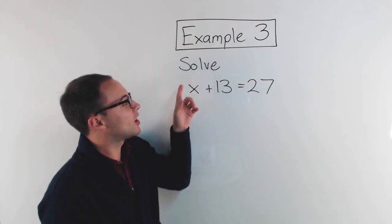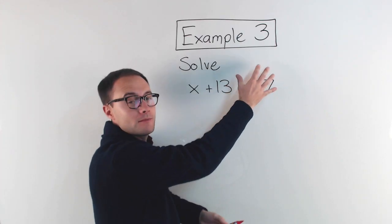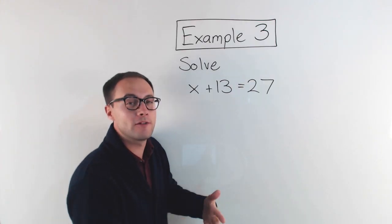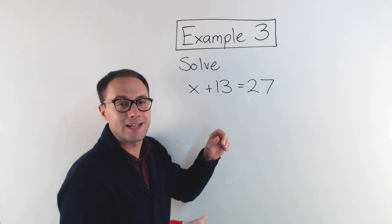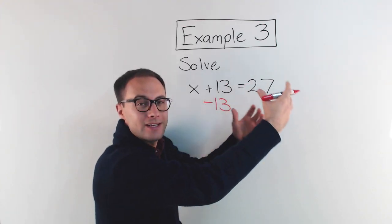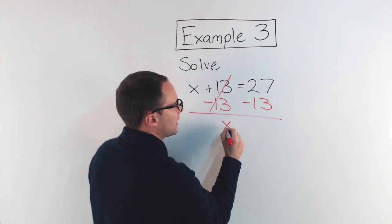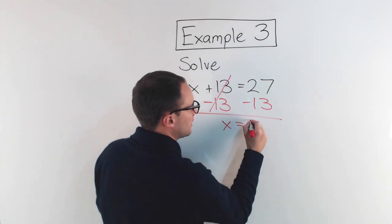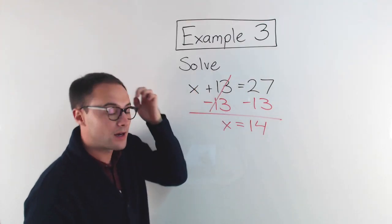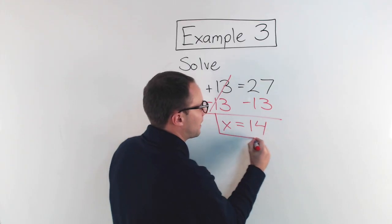Here's our last example: solve x plus 13 is equal to 27. Going about it the same way, focusing on the side that's got the variable. My goal is to get that variable alone. Right now we're adding 13 to it, so I need to get rid of that plus 13. The inverse operation of addition is subtraction, so I am going to subtract 13. Anything I do to one side, I do the exact same to the other. That goes away; I'm left with x. 27 minus 13 is 14. Check by substituting back: 14 plus 13 is 27. Yes it is. So 14 is my solution.